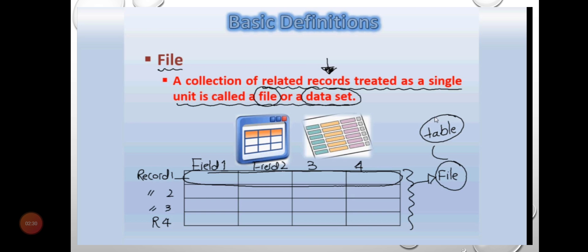A file is a collection of related records treated as a single unit, called a file or data set.